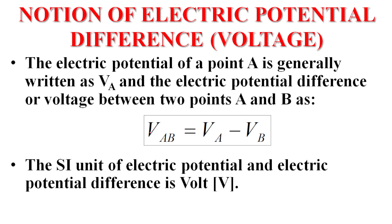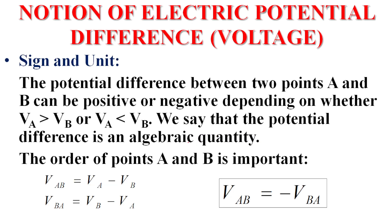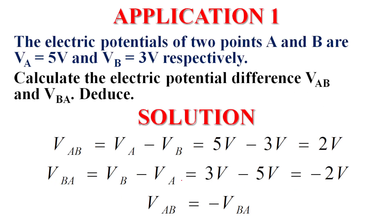Now let's define the potential difference between two points A and B. The electric voltage or electric potential difference between A and B is simply VA minus VB. Note: VAB equals VA minus VB — A is the first subscript, like working with vectors. The potential difference between two points A and B can be positive or negative depending on whether VA is greater than VB or VB is greater than VA. It is an algebraic quantity and could be positive or negative. Also, VAB equals negative VBA.